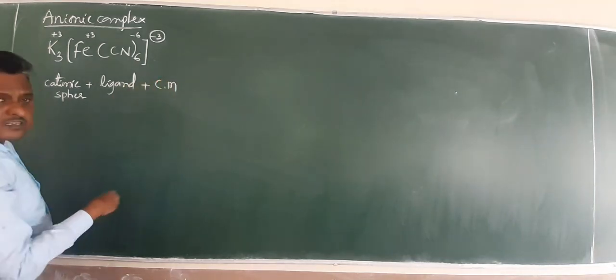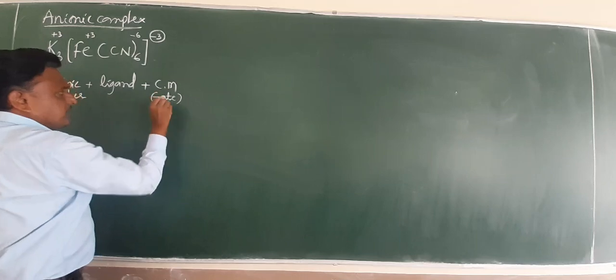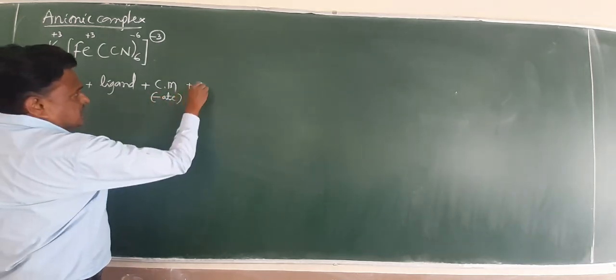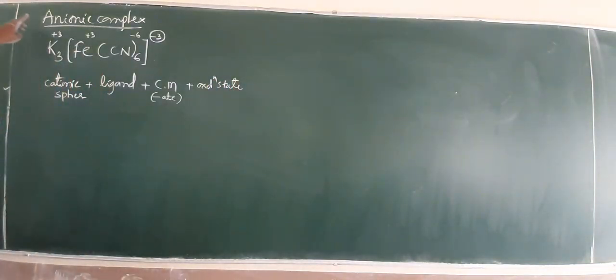Central metal, especially central metal is end up with ate. And lastly, oxidation state. Anionic complex. Cationic sphere first.